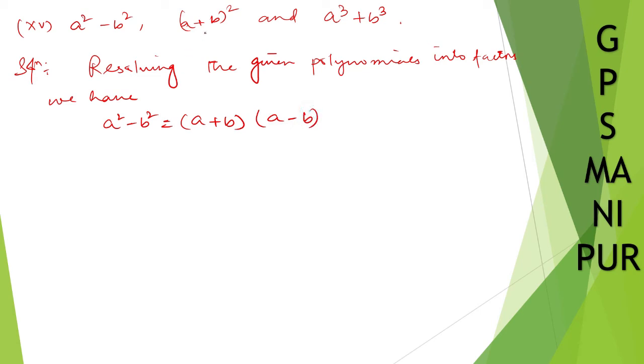Simple. A plus b whole square. We can write down a square plus twice ab plus b square, but we will not write it because we need to take the factors and we need to take the common. So write down as a plus b into a plus b, which is a plus b whole square.